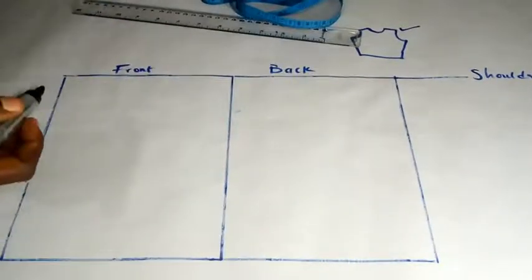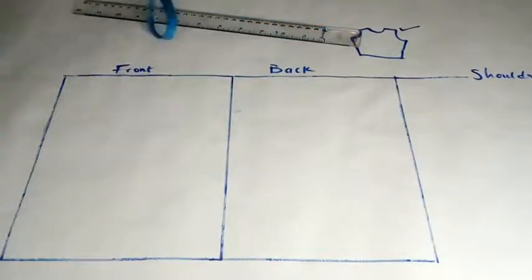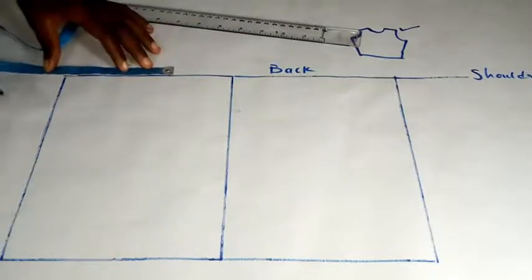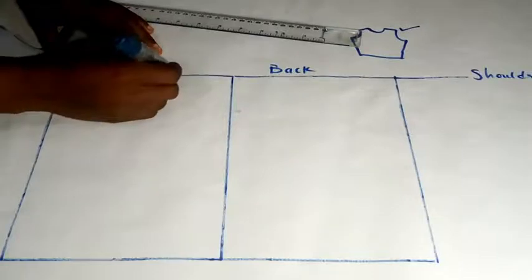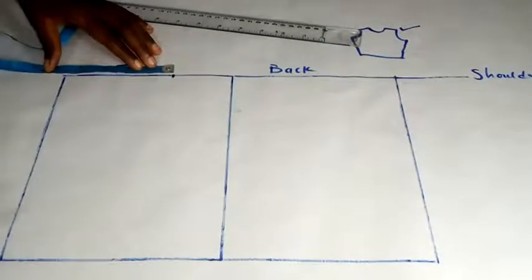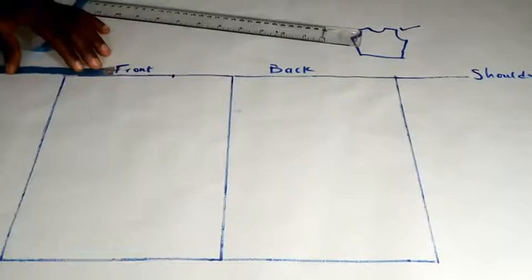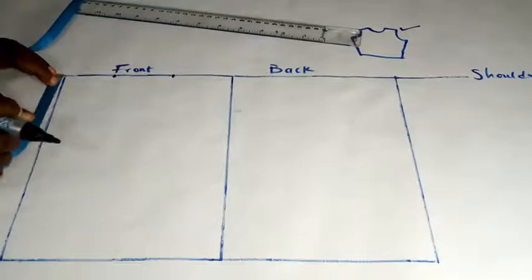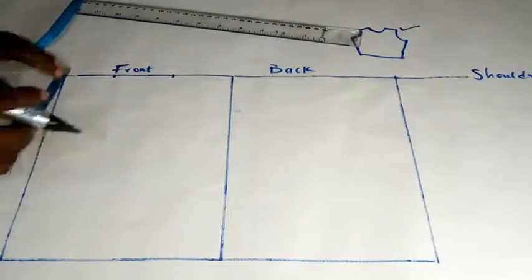The next thing I'm going to do is insert my shoulder measurement. My shoulder is 9, divided by 2 gives me 4.5. So this is 4.5 here. The next thing I'll do is take my neckline - I'm taking 2 by 2.5. I'm making this dress for a child of 2 years, so this neckline is just fine.